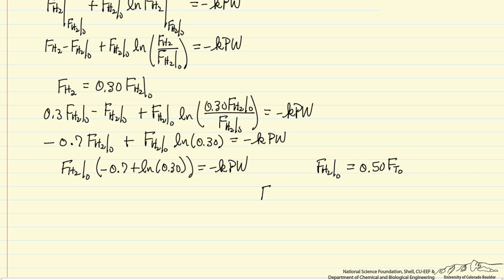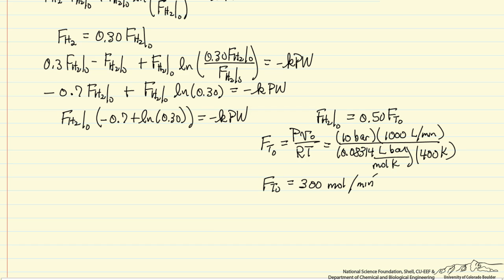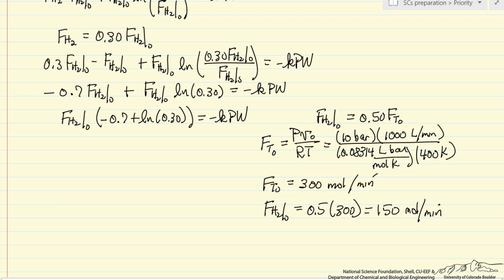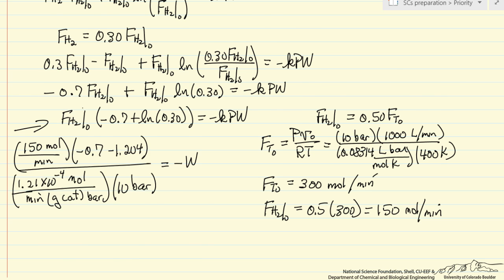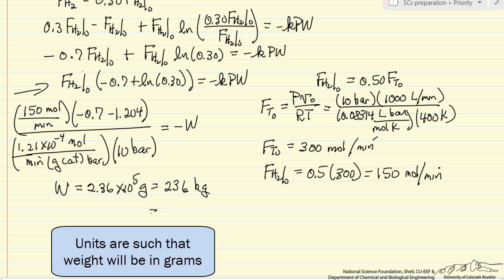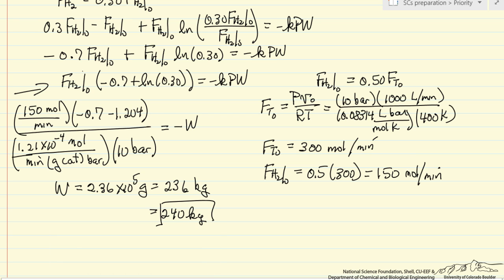We can get the total inlet flow rate from the ideal gas law: pressure times volumetric flow rate over RT. Substituting in the values, the total flow rate is 300 moles per minute, and the inlet flow rate of hydrogen is one-half of 300, or 150 moles per minute. Now we substitute all values into the equation and solve for W. The result is approximately 236 kilograms, or about 240 kilograms in terms of significant figures — this is the amount of catalyst needed to achieve 70% conversion in the larger reactor.